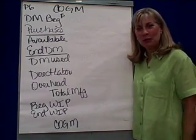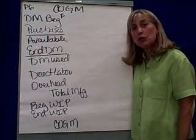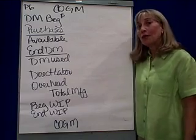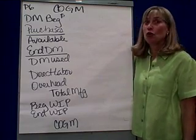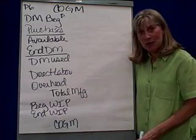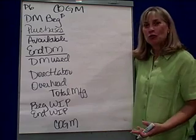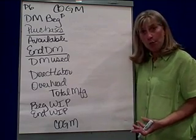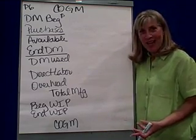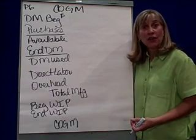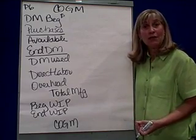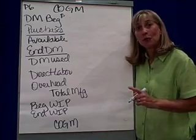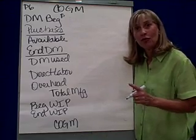Managerial accounting — the budgeting process. We've been doing problem P6. So far we've done the sales budget, which drives the production budget, which drives the inputs: materials, labor, and overhead budgets. We've also done the selling, administrative, and general budget, which we've learned is not driven by units produced but by units sold.